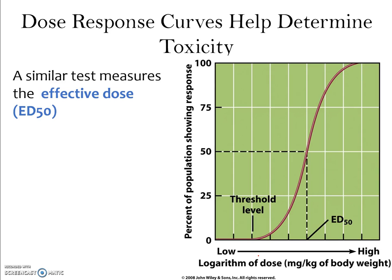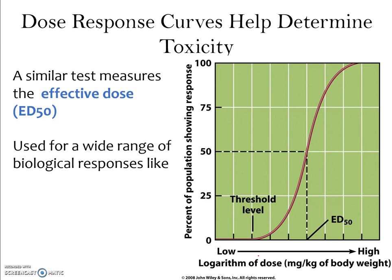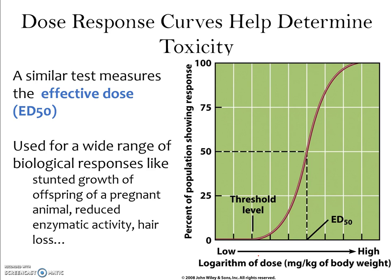Similar to the LD50 is the ED50, or effective dose 50 — instead of measuring a lethal dose, this is the dose required to see a response. We can use this for a wide range of responses: stunted growth of offspring, reduced enzymatic activity, hair loss, and many others. The ED50 tells us the dose at which we see that response in 50% of individuals.